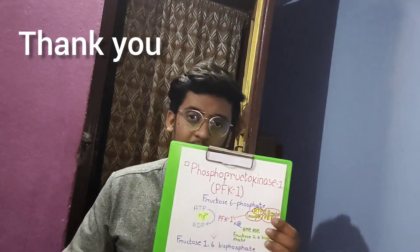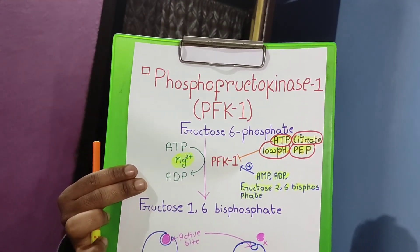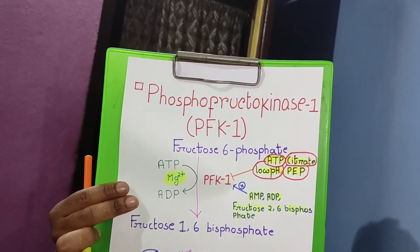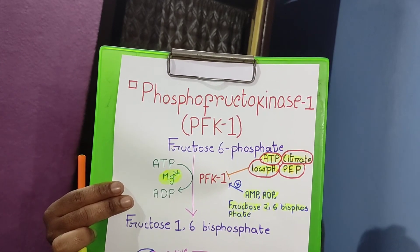PFK1 transfers the gamma phosphate of ATP to fructose 6-phosphate, ultimately forming fructose 1,6-bisphosphate. There are certain inhibitors and allosteric activators that regulate the activity of phosphofructokinase 1.